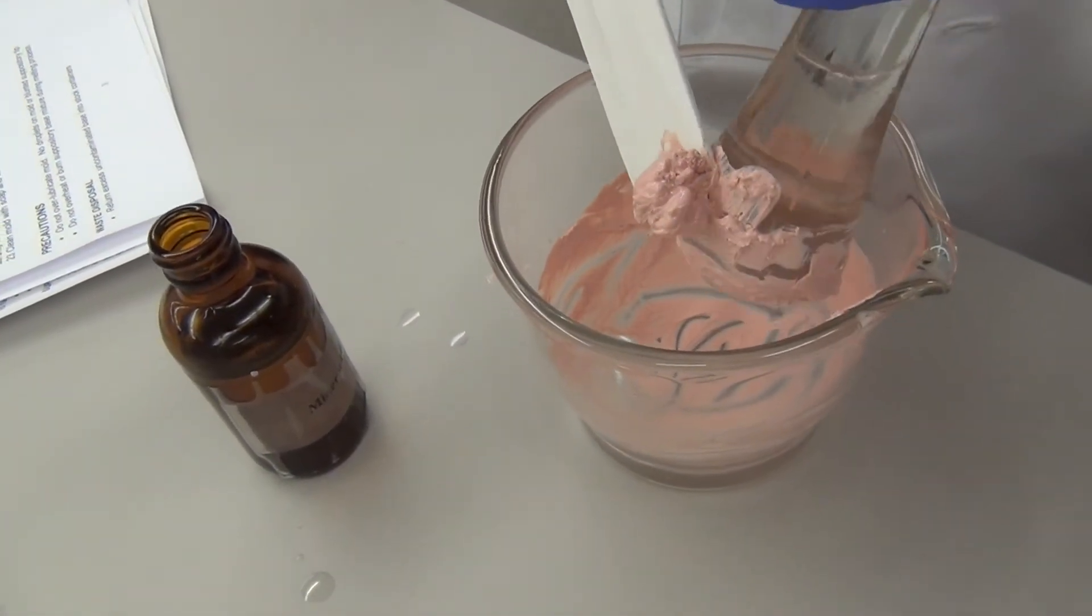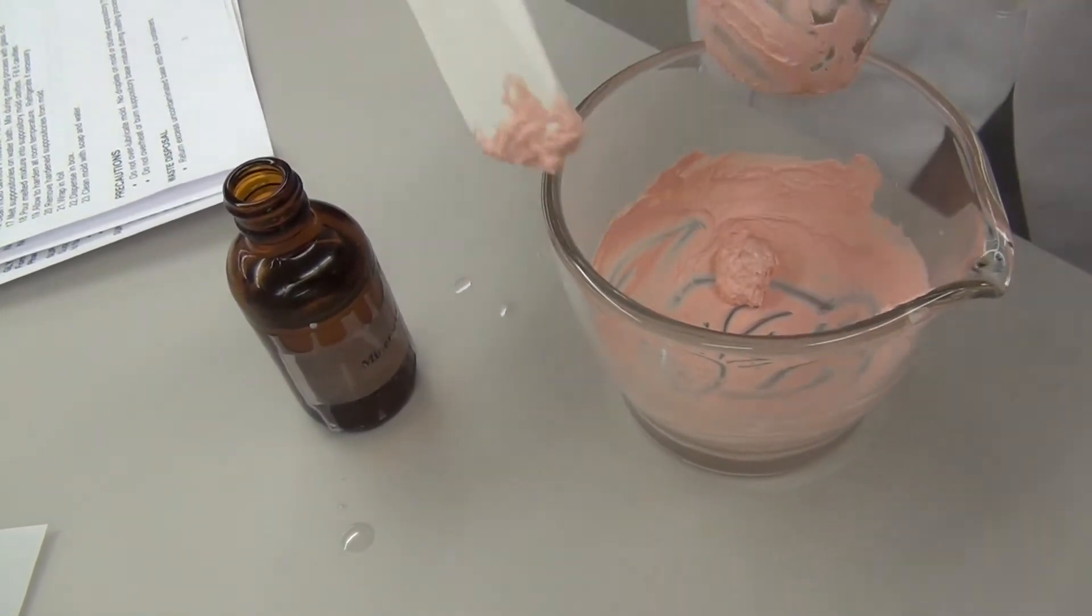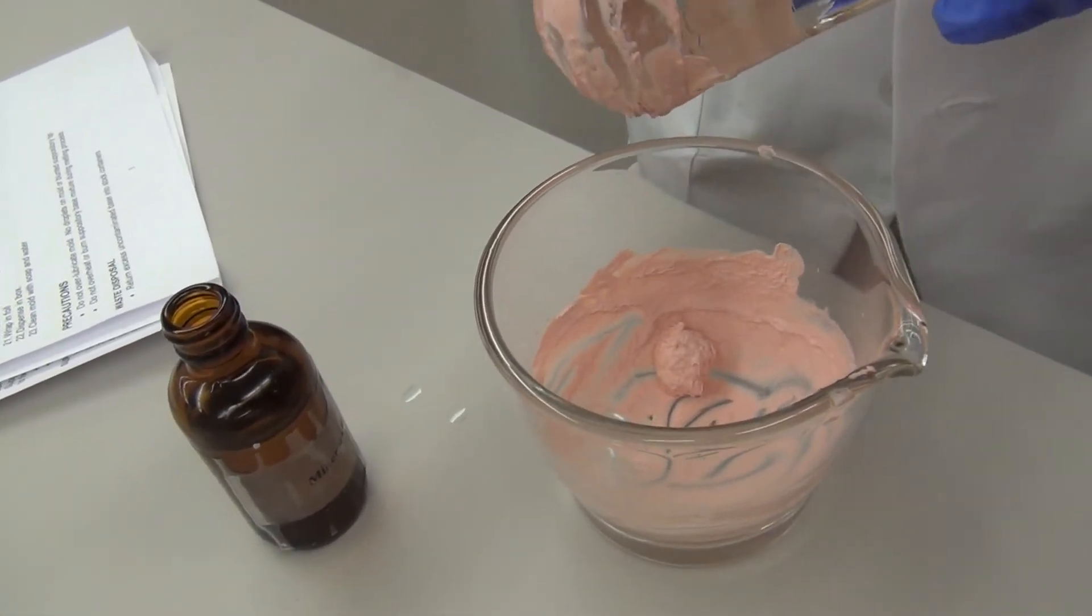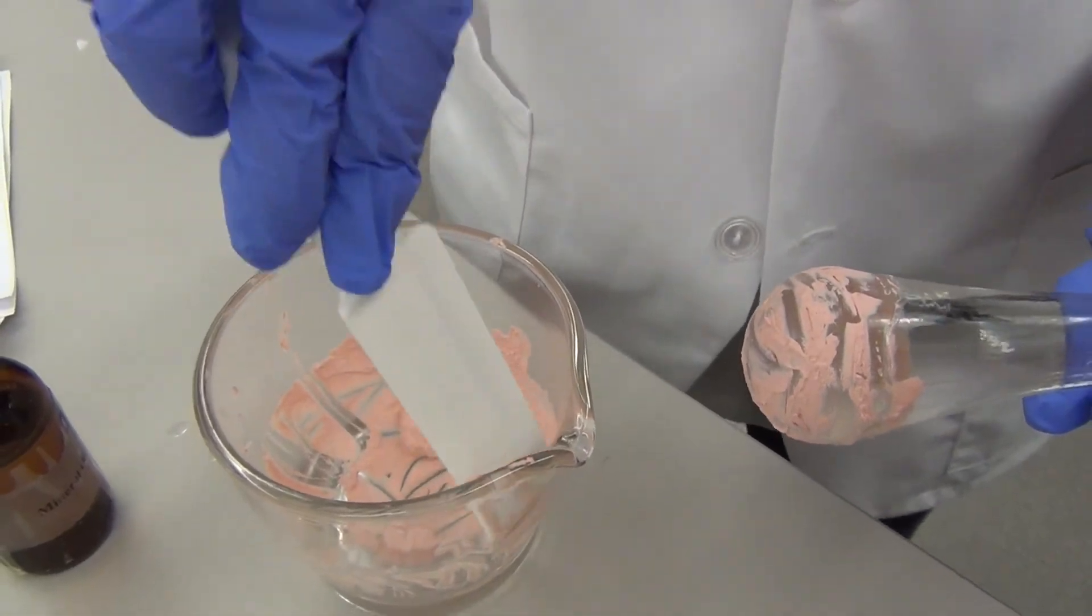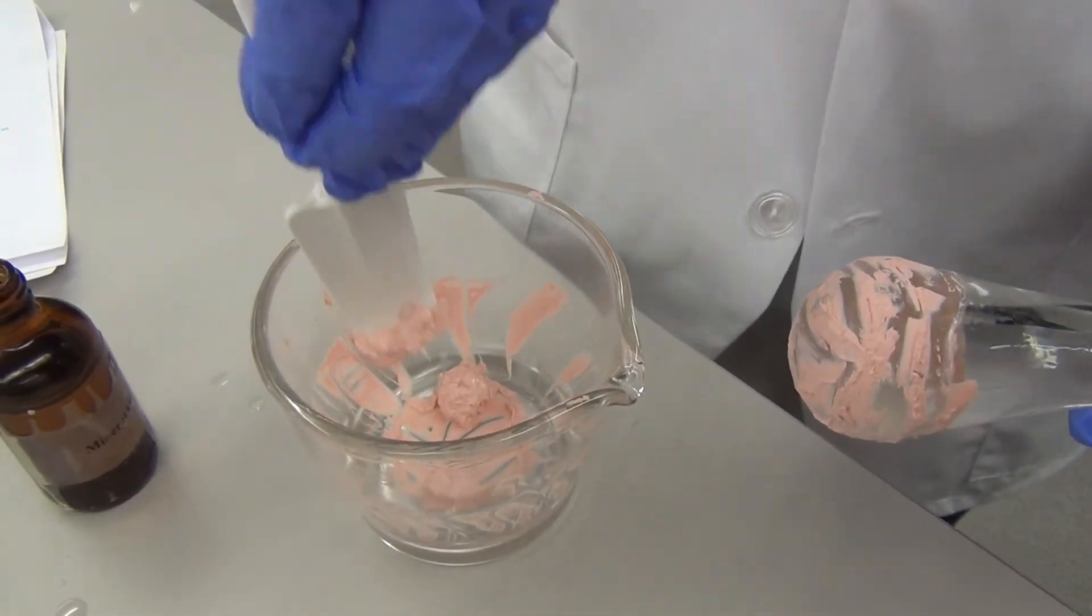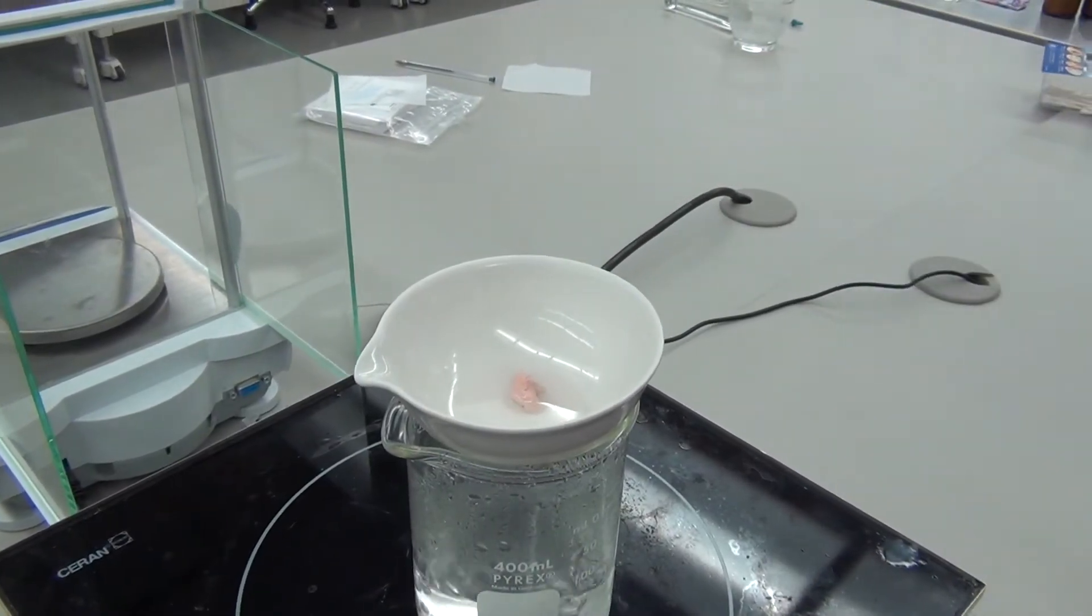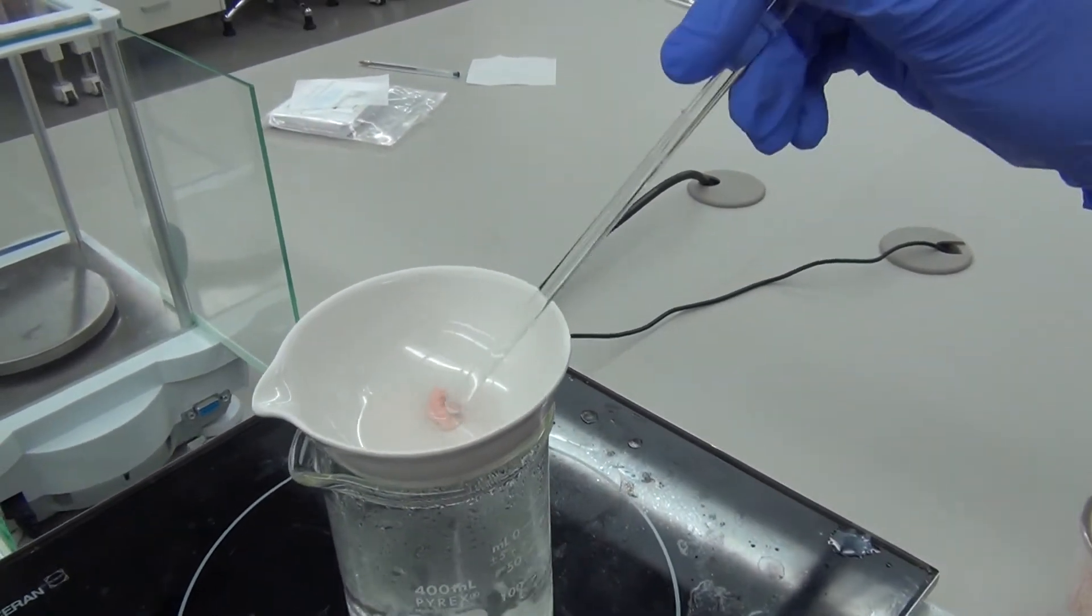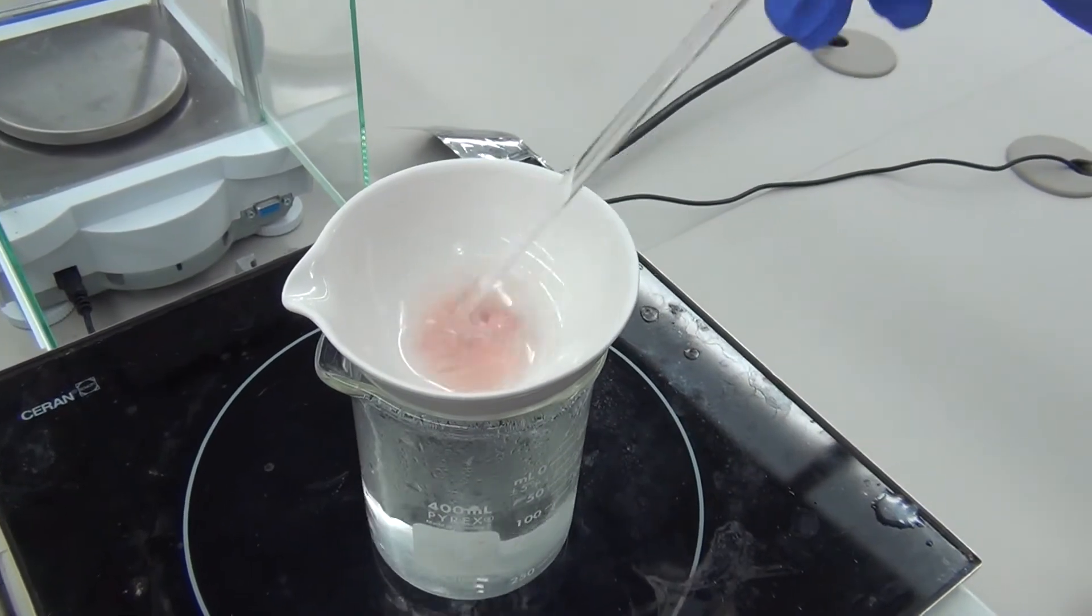Use the rubber spatula to help get all of the drug together. At this point, your fatty blend should be melted down, and you can start adding the drug in small increments to the evaporating dish. Make sure to continuously stir while you add the drug.